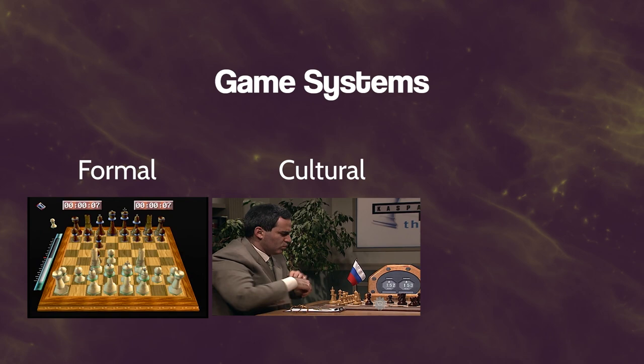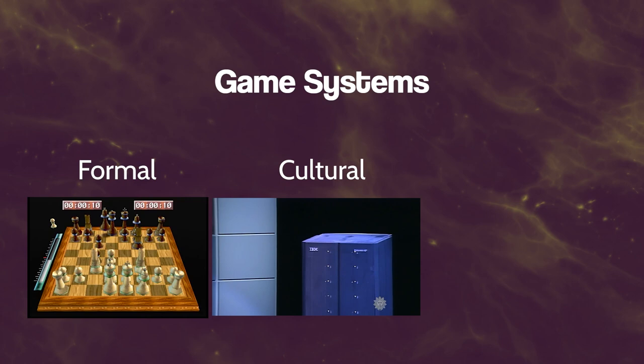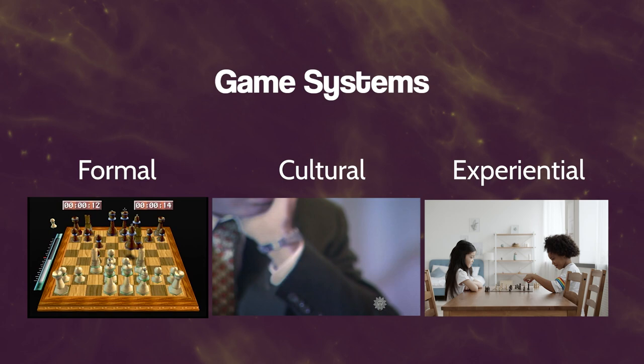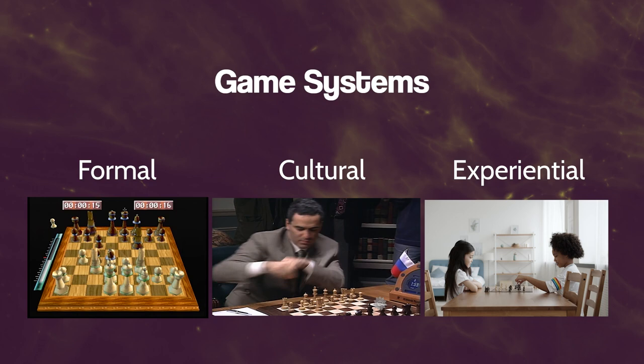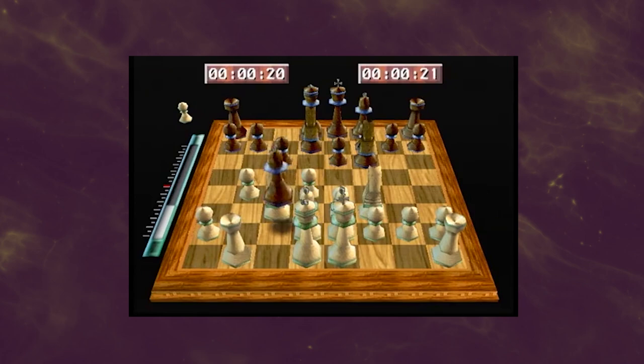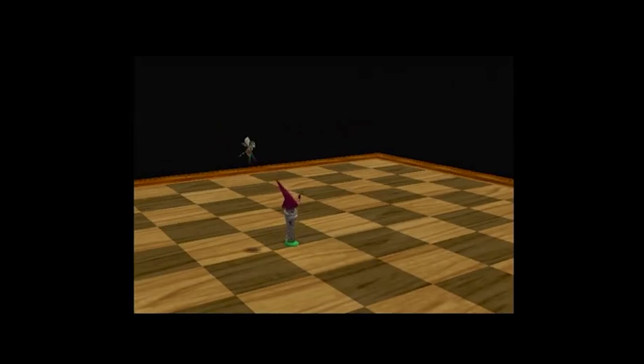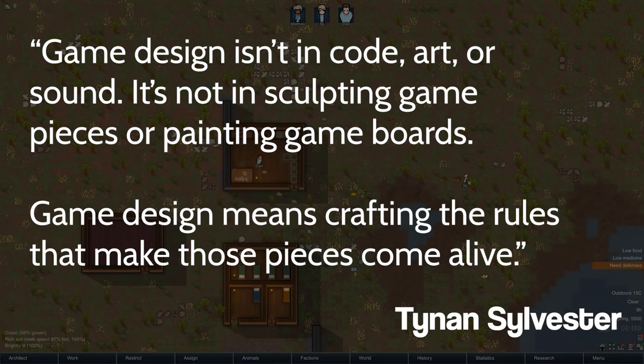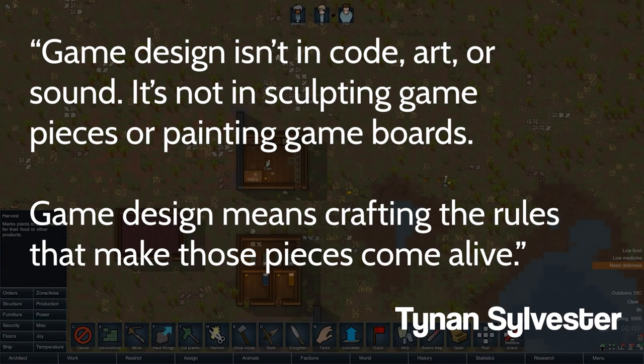The final part of the system is that we connect with others based on those formal and cultural levels. When playing a game within a cultural context, we experience feelings, act a certain way, and build relationships with the other people playing. At the end of the day, chess pieces are just pieces with rules — when we add people moving those pieces, we begin to create meaning. As Tynan Sylvester, creator of RimWorld, writes: "Game design isn't in code, art, or sound. It's not in sculpting game pieces or painting game boards. Game design means crafting the rules that make those pieces come alive." Games are learning spaces, and great educational practice will mirror much of what they do.